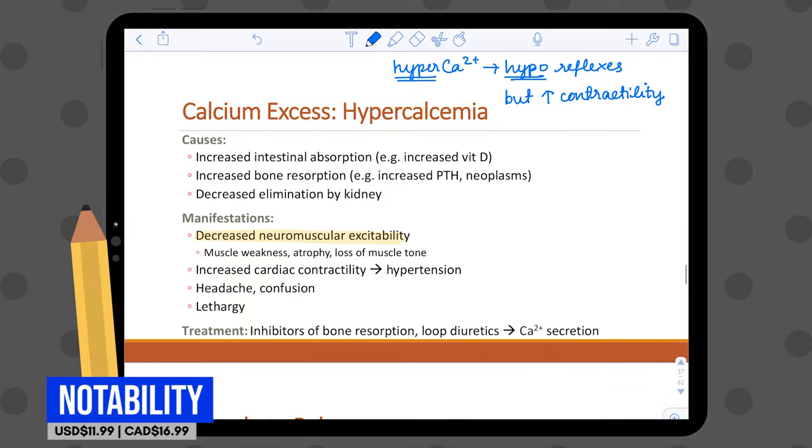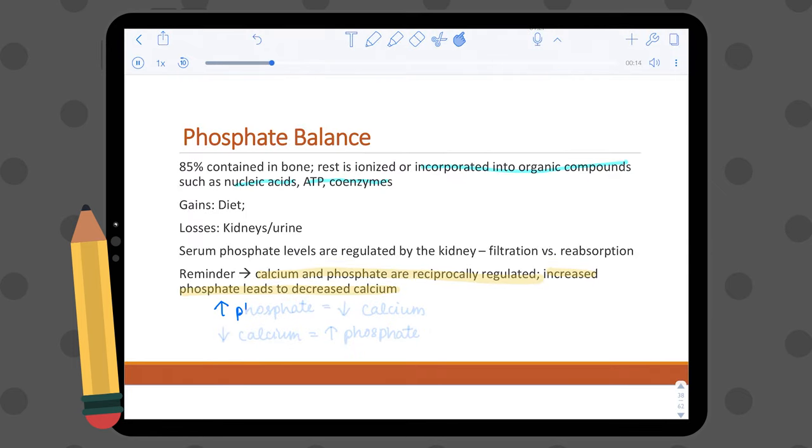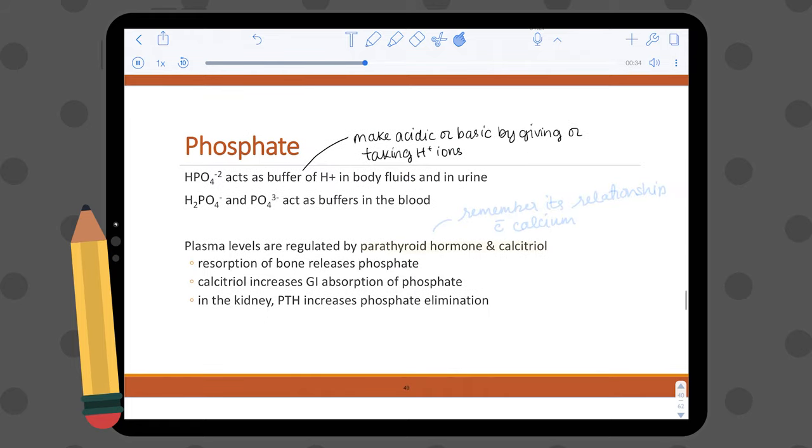If you're not writing fast enough to keep up, you can take advantage of Notability's audio recording feature, which you can use while annotating your PowerPoints. You can then replay the audio and also see when and where you wrote your notes. You can also tap a note and the audio jumps to whatever was being said at that time, which is pretty cool.